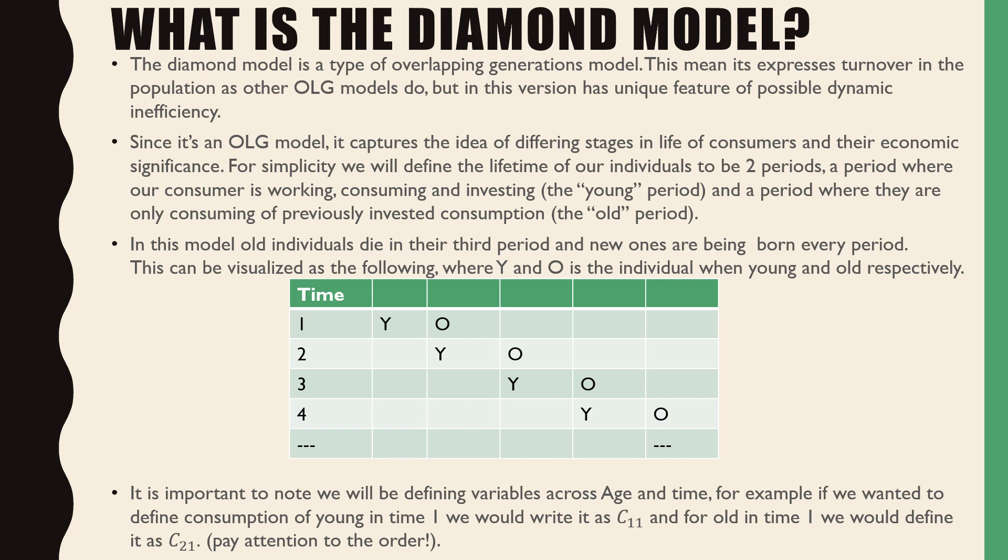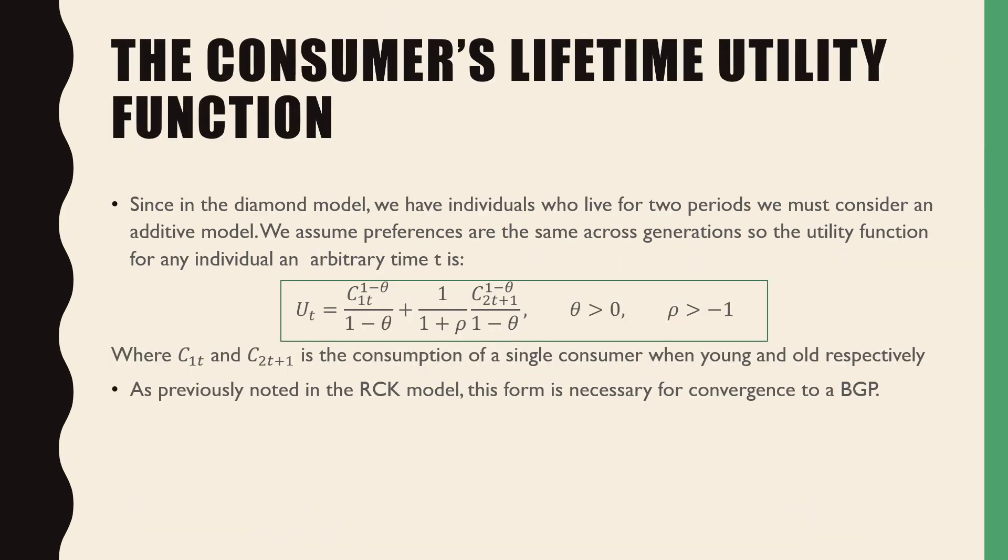This can be visualized as the following where Y and O is the individual when young and old respectively. It is important to note that we will be defining variables across age and time. For example, if we wanted to define consumption of the young in time 1, we would write it as C11, and for the old in time 1 we would define it as C21. So we have to pay attention to this order.